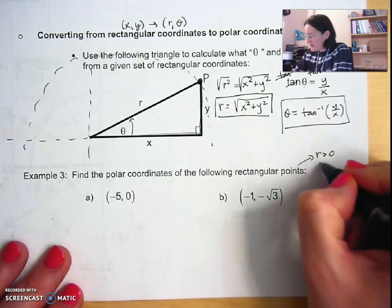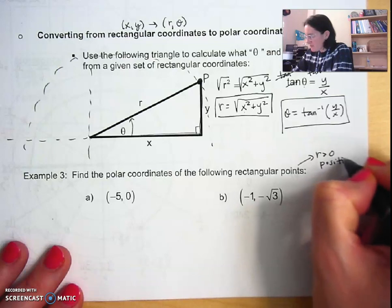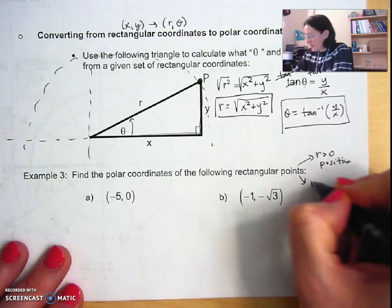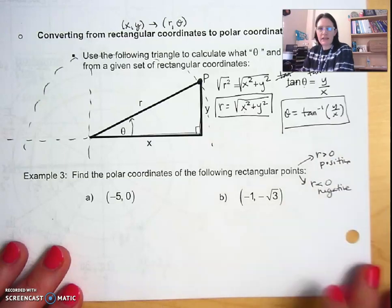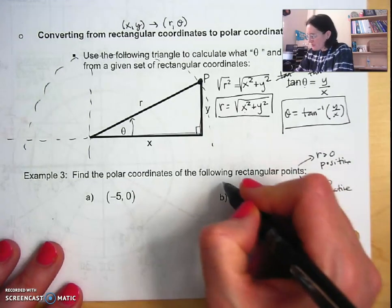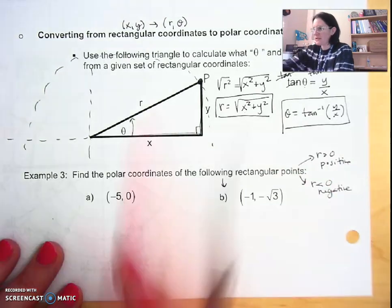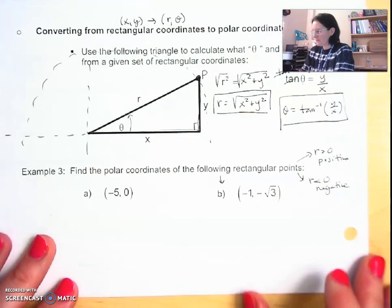We're going to find one point for where r is greater than zero, that means it's positive, and one point for where r is less than zero, that means it's negative. We're actually going to do b first because a is something different that I want to talk about in a second.